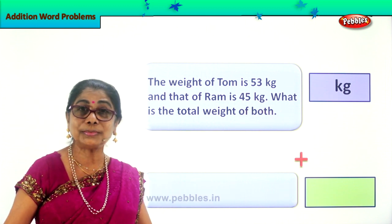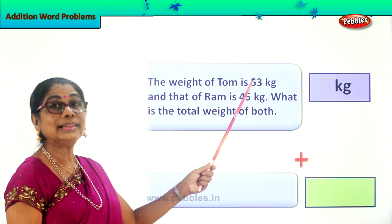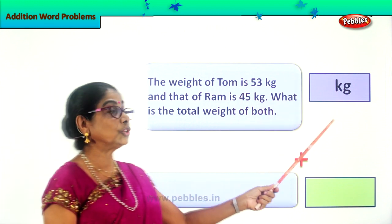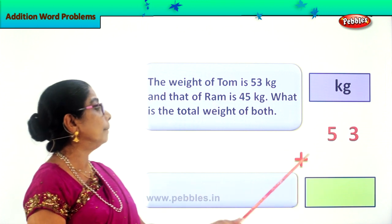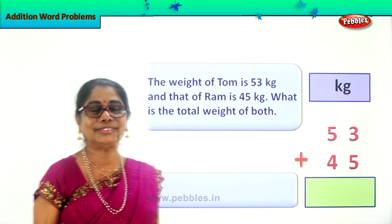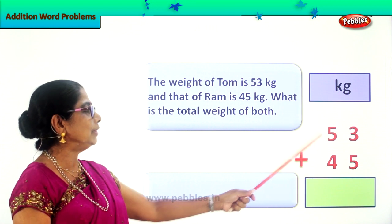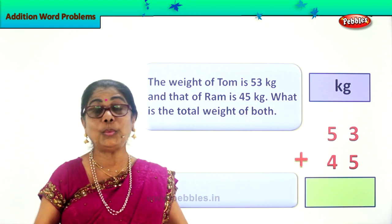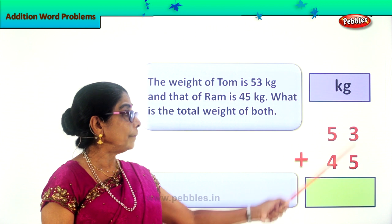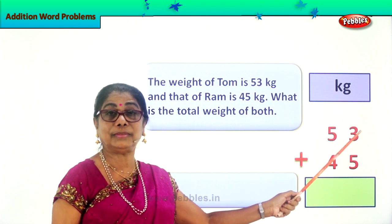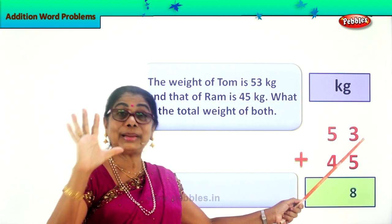What is the total weight of both? Now, the weight of Tom is 53 kg, so we write down weight of Tom 53 kg, weight of Ram plus 45 kg. 53 kg plus 45 kg. Now we will get the total weight of the two boys. 3 plus 5 — after 3: 4, 5, 6, 7, 8 — 3 plus 5 is 8. So we write down 8.